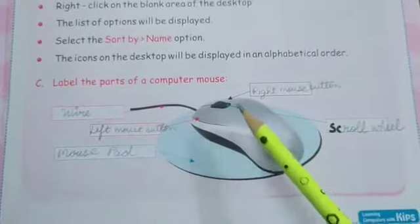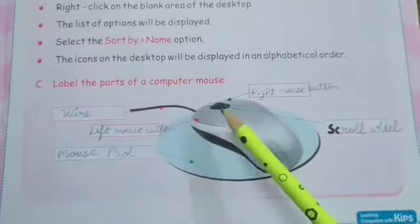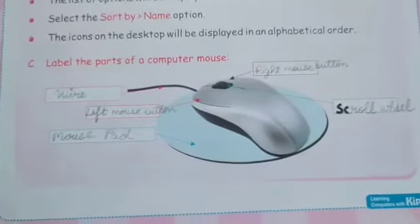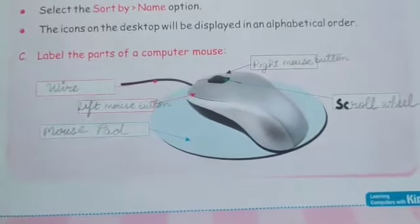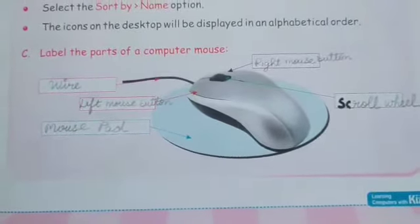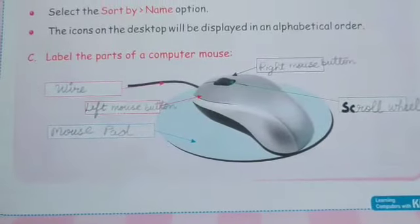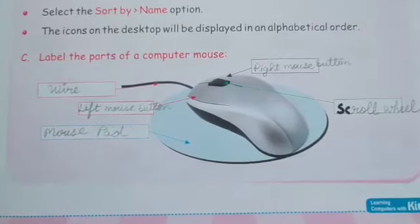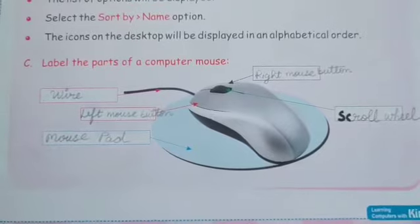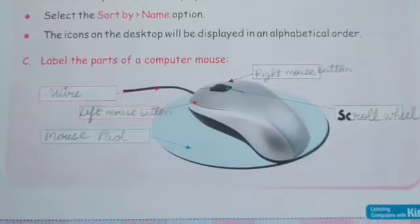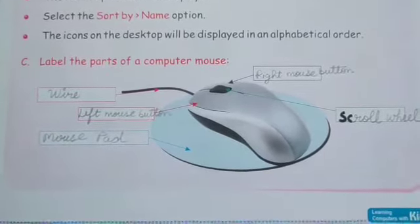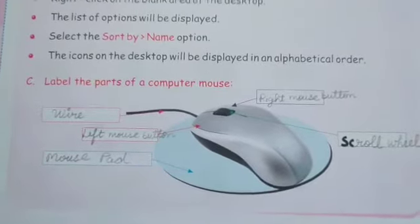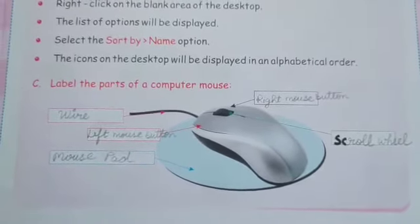You also have to label the parts of a computer mouse in your book. Part A and B of my activity are on page number 34. Answer in one word you have to write in your computer copy. Okay, thank you, bye-bye.